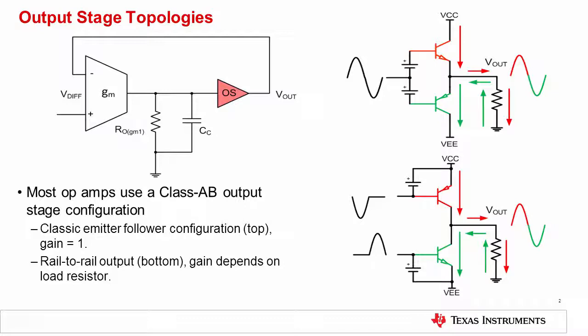Output stage distortion originates in the final output block of the op-amp, highlighted in red in this diagram. Output stages can be categorized into two main configurations. There is the classic class AB output stage, or emitter-follower output stage, shown here in the upper right-hand side. There is also the rail-to-rail, or common collector configuration, shown on the lower right-hand side.